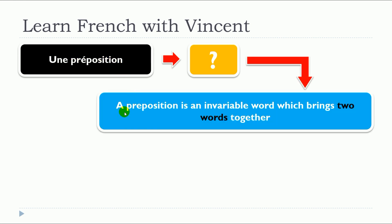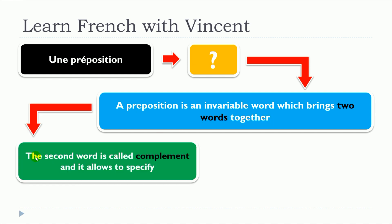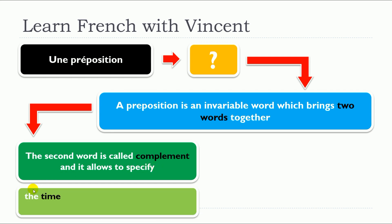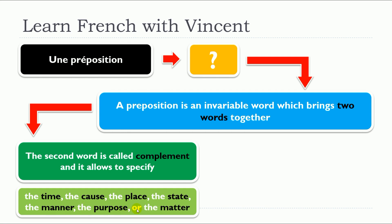A preposition is an invariable word which brings two words together. The second word is called complement, and it allows to specify the time, the cause, the place, the state, the manner, the purpose, or the matter.